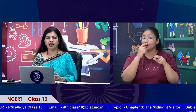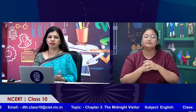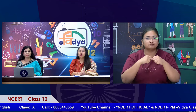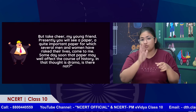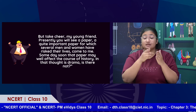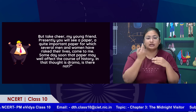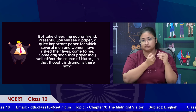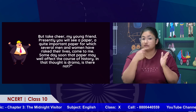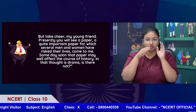The whole setting is explained through the words of Ausable, who is described as having a wheezy accent — he suffers from asthma, so he doesn't have a very loud and clear voice. But then he goes on to say: 'Take cheer, my young friend. Presently you will see a paper — a quite important paper for which several men and women have risked their lives. Come to me someday soon; that paper may well affect the course of history — in that thought is the drama, is there not?' Although the setting does not look adventurous, something dangerous is going to happen.